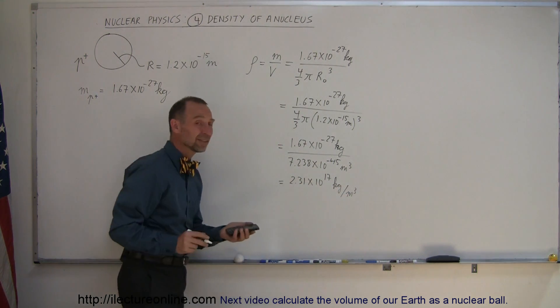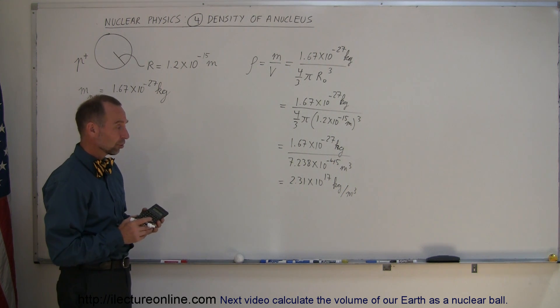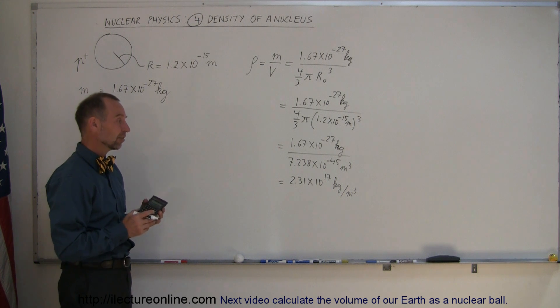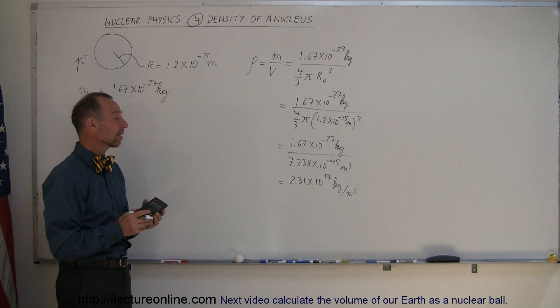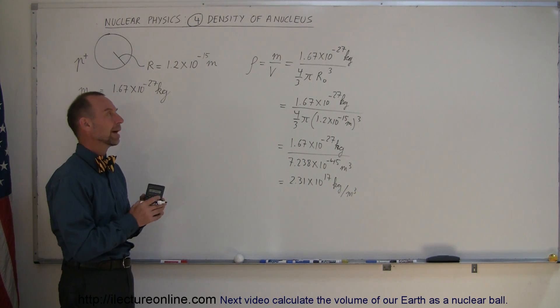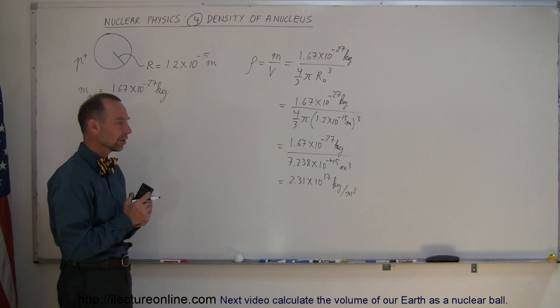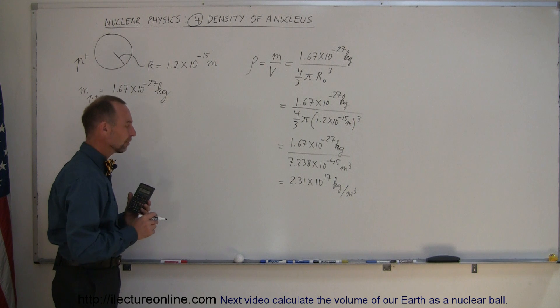that gives us a density of 2.31 times 10 to the 17th kilograms per cubic meter. Now 10 to the 17th, that's a huge number. 10 to the 12th is a trillion, while 10 to the 15 is thousands of trillion, so that would be like 231,000 trillion kilograms per cubic meter. That's an enormous amount of mass. Nuclear material is extremely dense, extremely massive compared to its volume.